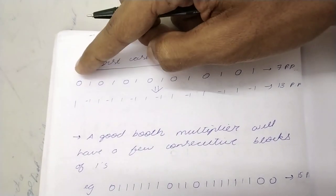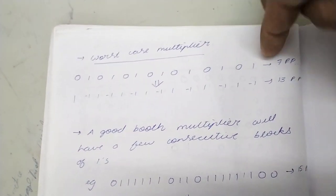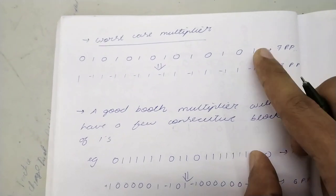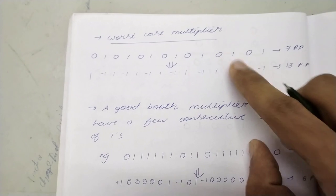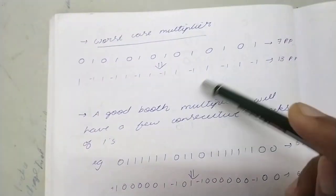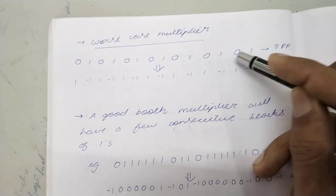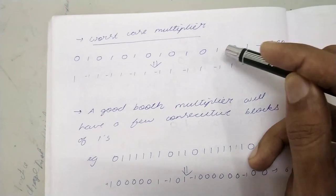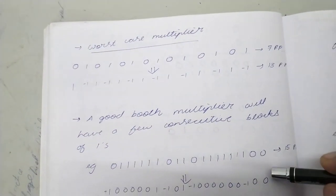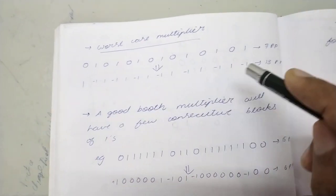So let's say the multiplier we got is this one. 0 minus 1 is minus 1, 1 minus 0 is 1, 0 minus 1 is minus 1, like that it will go. So here the number of partial products - these are zeros, right? We count only the 1's. 7 partial products are there. That's for normal multiplication.